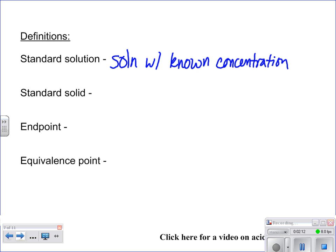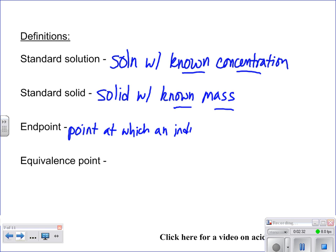A standard solid is going to be a solid with a known mass. Your endpoint is going to be the point at which an indicator changes colors. And the equivalence point is going to be when you have your concentrations of both your hydrogen ions and your hydroxide ions are going to be the same.